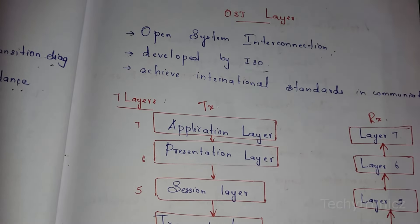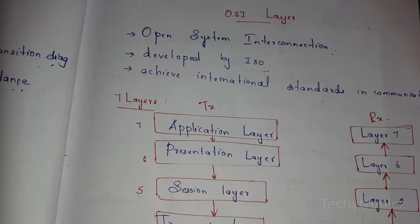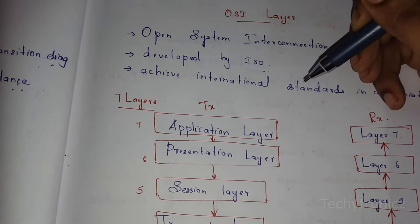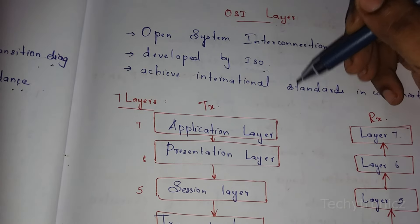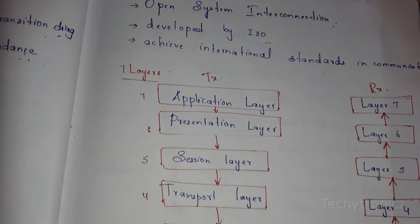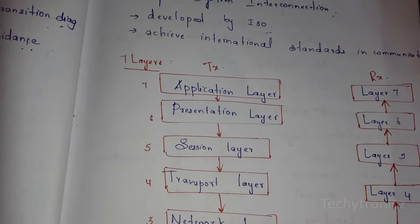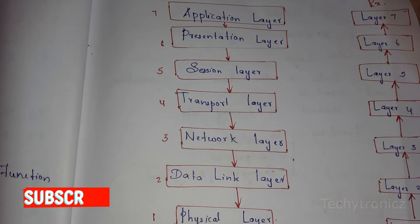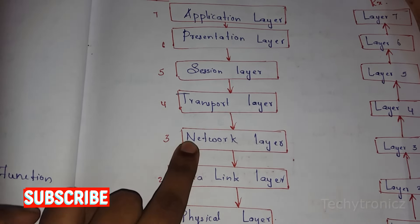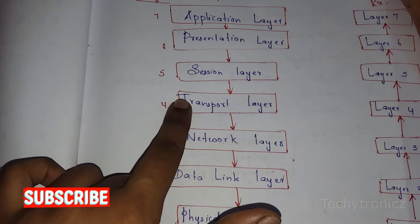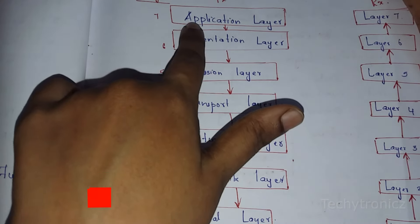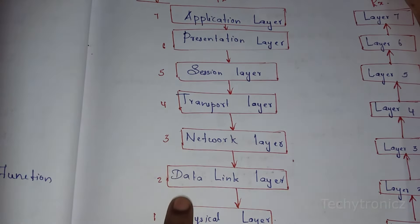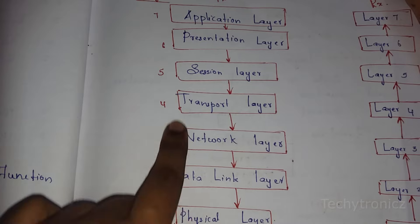So the OSI system has seven layers. The layers are: physical layer (first layer), data link layer, network layer, transport layer, session layer, presentation layer, and application layer — seven layers in total. That is the bottom-up approach.